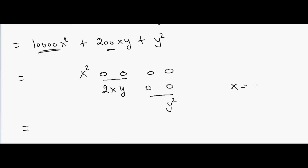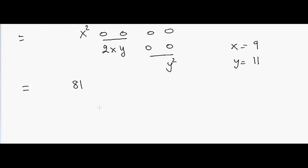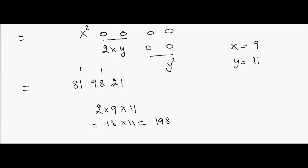For example, with x equals 9 and y equals 11: 9 squared is 81, 2xy is 2 into 9 into 11 equals 198, and y squared is 11 squared equals 121 — so we write 21 and carry 1. The answer is 89921.